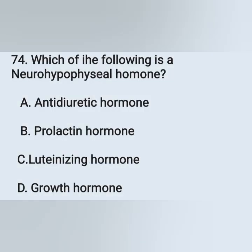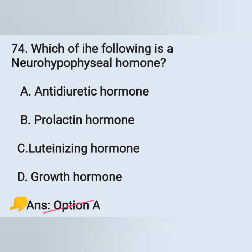Question 74: Which of the following is a neurohypophyseal hormone? Option A: Antidiuretic hormone, Option B: Prolactin, Option C: Luteinizing hormone, Option D: Growth hormone. The neurohypophyseal hormone is antidiuretic hormone — Option A is the correct answer.